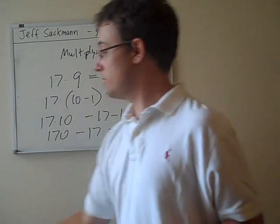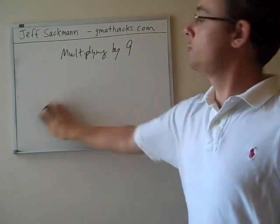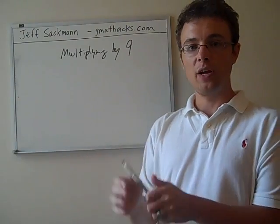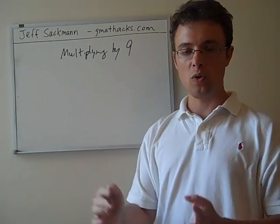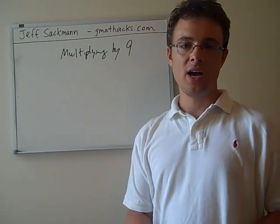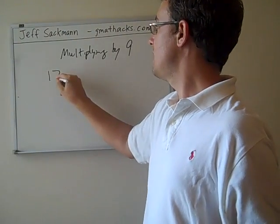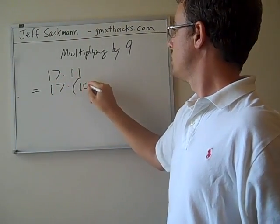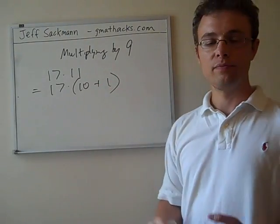Now, the great thing about this tactic is even though I've introduced it as multiplying by 9, the tactic of taking a number and breaking it up into 10 minus 1, it's not limited to 9. You can easily do it with 11. So, if you were doing 17 times 11, that's the same as 17 times 10 plus 1. Same deal.